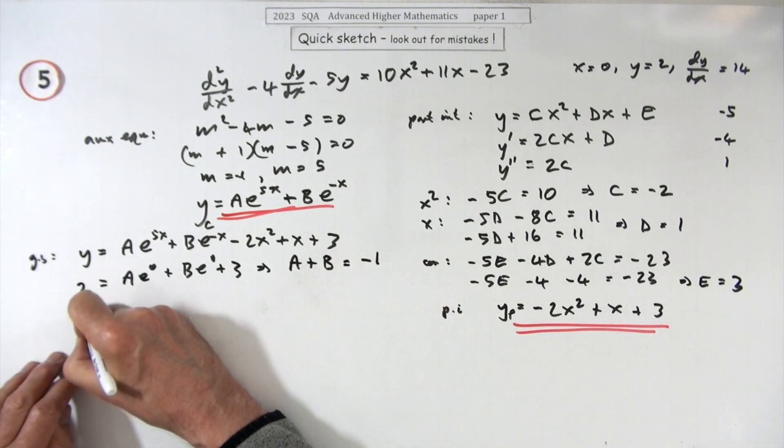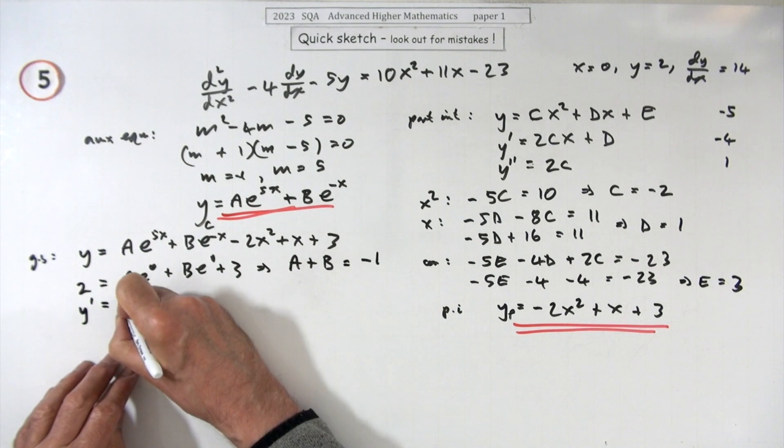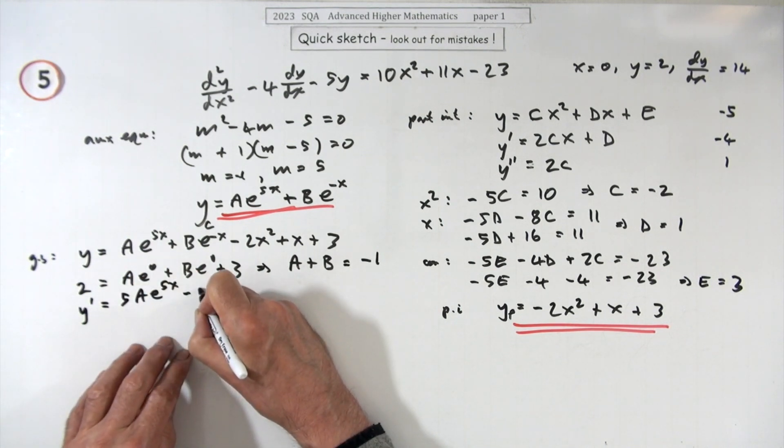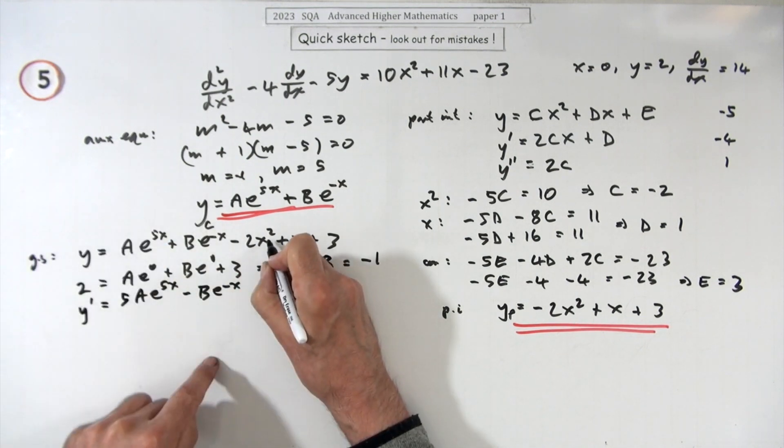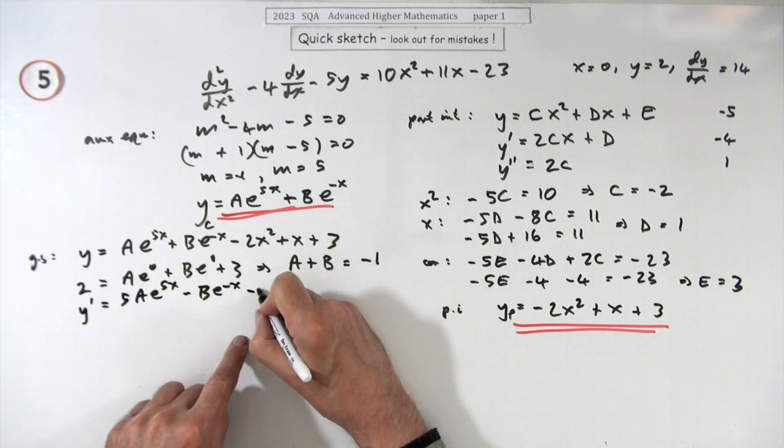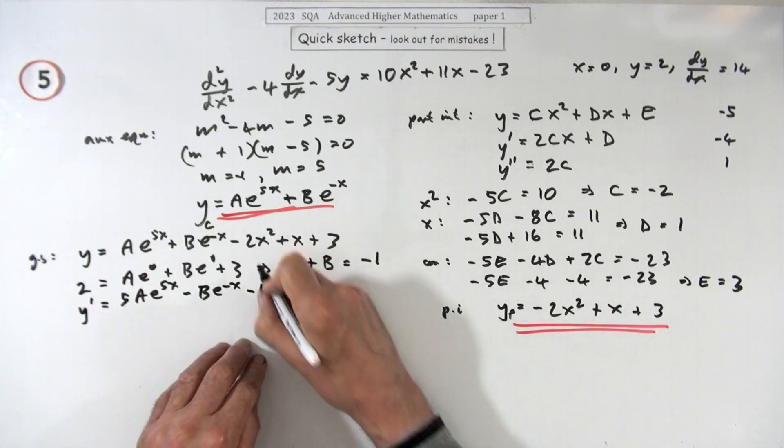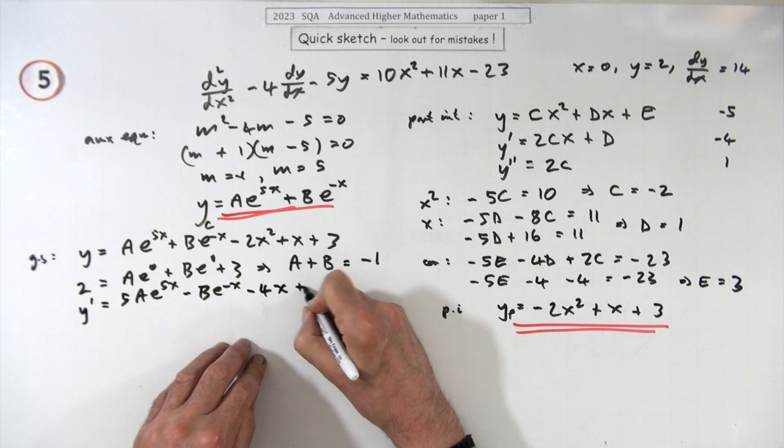Need to differentiate it, so it'll be 5a e to the 5x minus b e to the negative x, and minus, no that it matters because x is going to go, but it doesn't go yet, minus 4x plus 1.